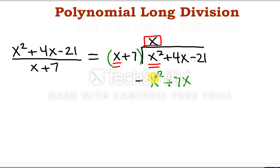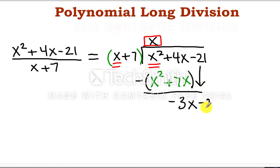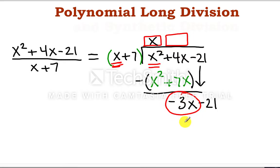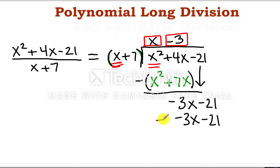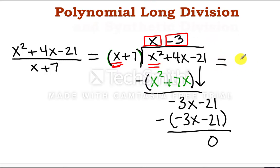Remember in long division we have to subtract that quantity. x squared minus x squared is 0. 4x minus 7x is negative 3x. Bring down the next term. Now we're dividing negative 3x minus 21 by x plus 7. We take the first term x and ask what do I multiply by to get negative 3x — that's negative 3. So negative 3 multiplied by the entire quantity x plus 7 gives us negative 3x minus 21. We subtract that quantity and end up with 0, so we have no remainder. The answer to this division problem is simply x minus 3.